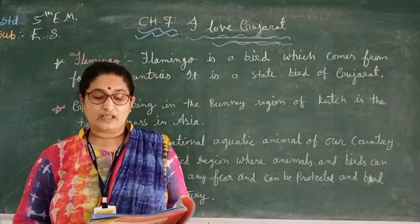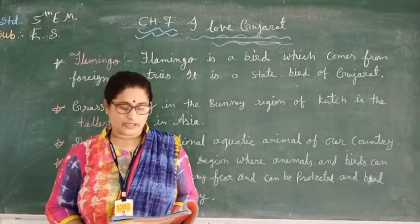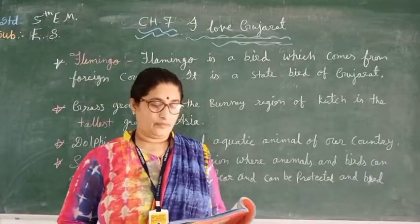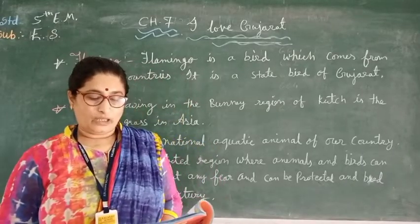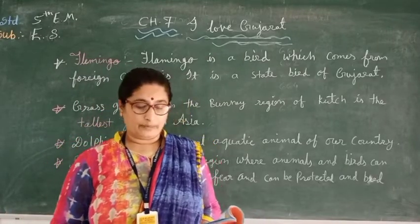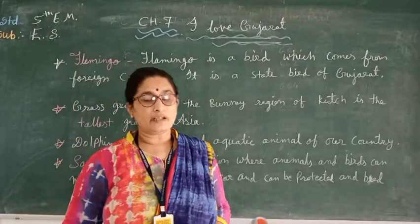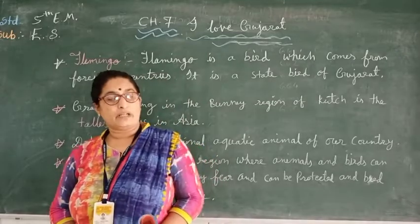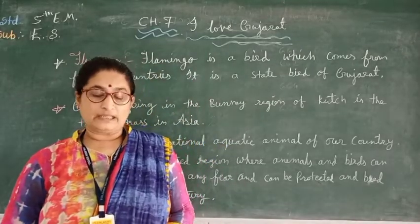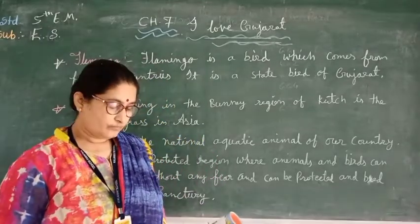Flamingo is a bird which comes from foreign countries. Foreign countries se aati hai — it means out of our country. Along with flamingo, other birds also come. Flamingo ke saath saath dusri bhi birds hamarai yaan aati hain. Birds coming from foreign countries are known as migratory birds.